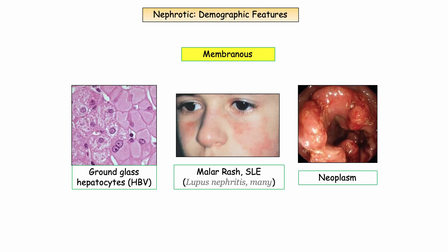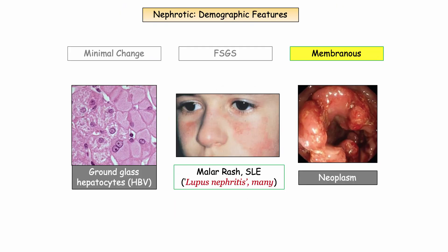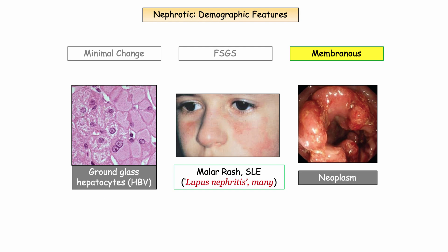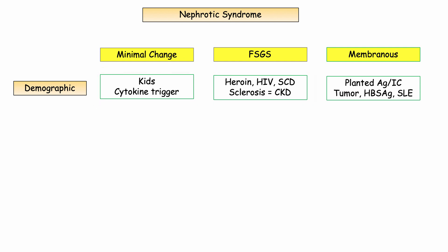These pathogenic mechanisms are the potential demographic identifiers: hepatitis B, SLE, or associated neoplasm. The tumor may or may not be clinically apparent, so in a new diagnosis of membranous nephropathy, consideration for occult neoplasm should be in the back of your mind absent another cause. Primary membranous accounts for the majority of cases. Regarding SLE, be aware there is no singular disorder that characterizes lupus nephritis — whereas diffuse proliferative is most characteristic, the classification includes at least six different subtypes. The question stem will be clarifying in a lupus patient with renal disease.